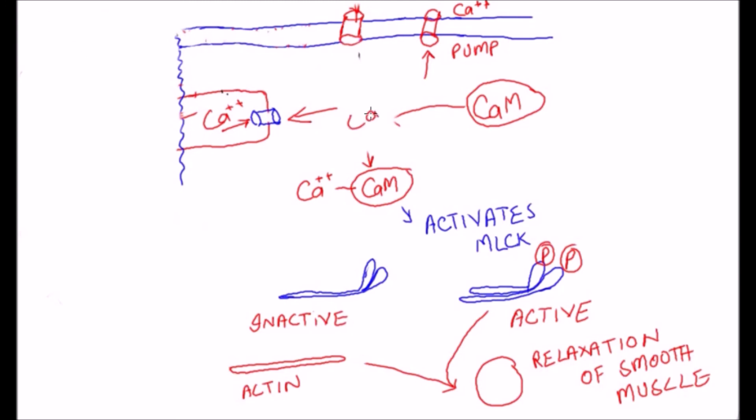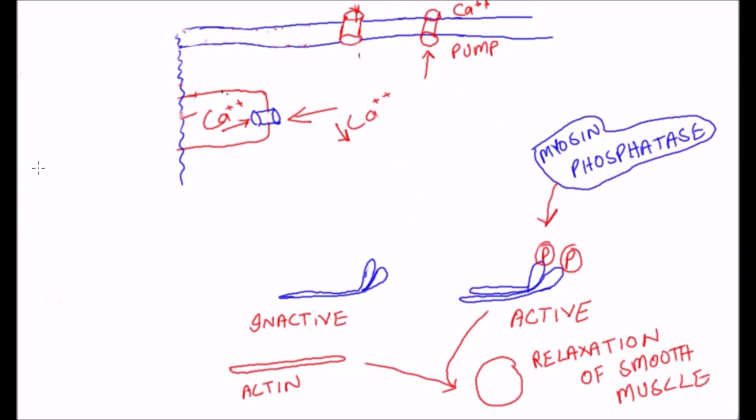The calcium ion concentration falls below a critical level and another enzyme called myosin phosphatase, located in the cytosol of the smooth muscle cell, splits phosphate from the regulatory chain and makes the myosin head inactive. Thus cycling stops, contraction ceases, and relaxation of smooth muscle occurs.